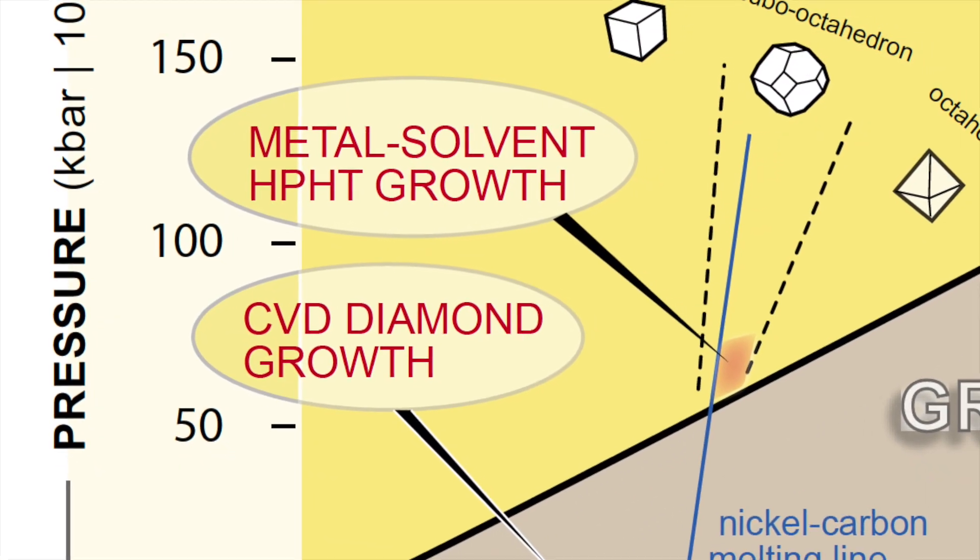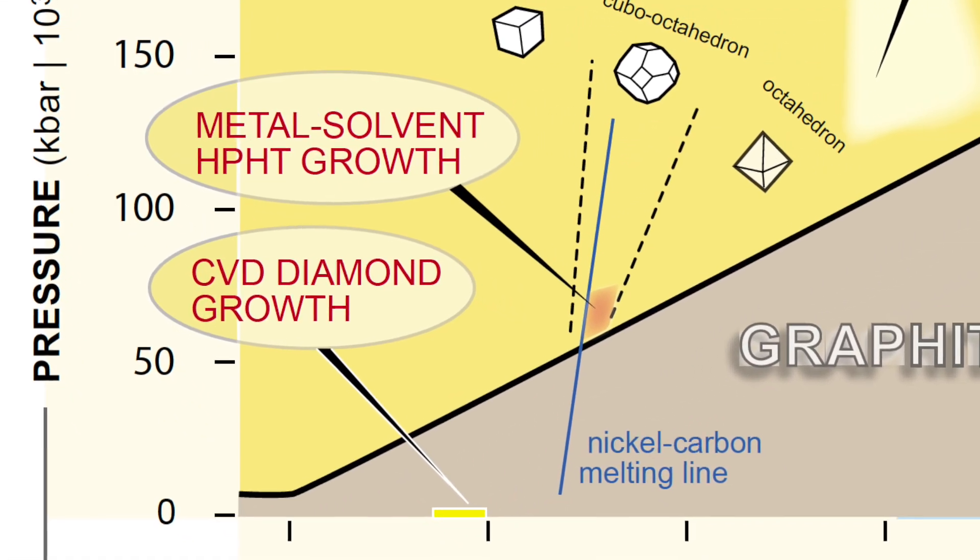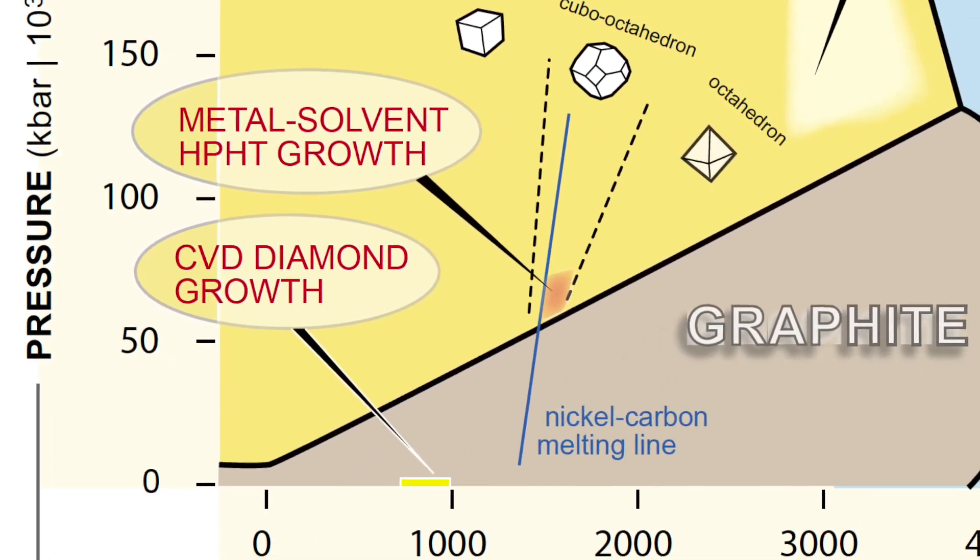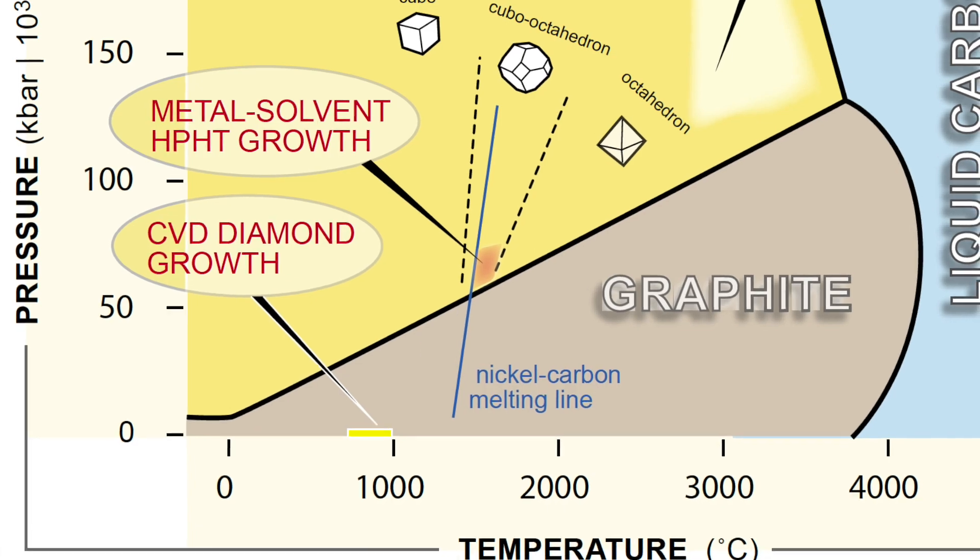To grow diamonds in the diamond stable temperature and pressure regime, high pressure and high temperature, also known as HPHT, are needed. This is the method which I'll briefly describe to you now.